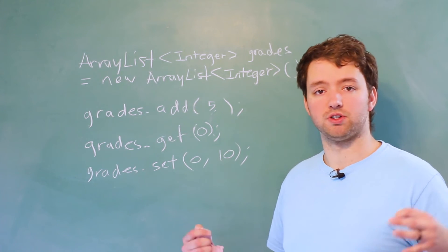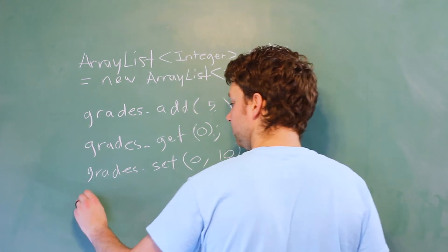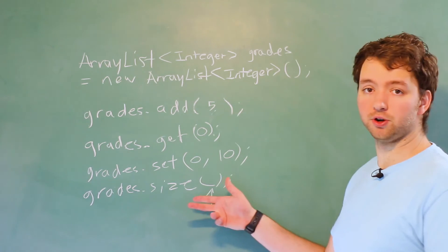The list is also going to have a size method, which is going to give you how many elements are in the array. So just say grades.size. And this is a method here. So make sure you put those parentheses. That's going to return a value.